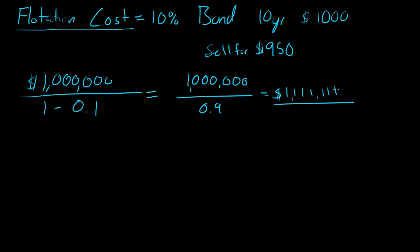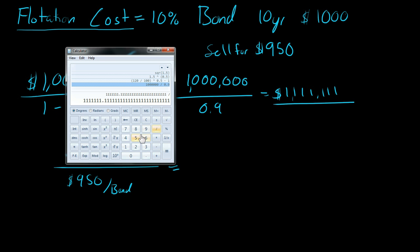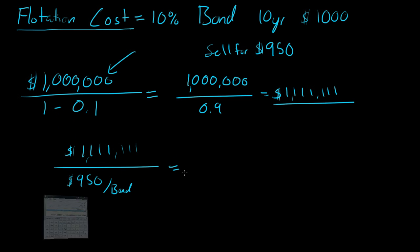So if that's how much money we actually have to raise, how many bonds do we have to sell to reach the money we need for our initial million dollars? We take that $1,111,111 and divide it by the $950 we're selling the bonds for. That gives us 1,169 bonds. So that's how many bonds we have to sell to get the initial million dollars when you take the flotation cost into account.